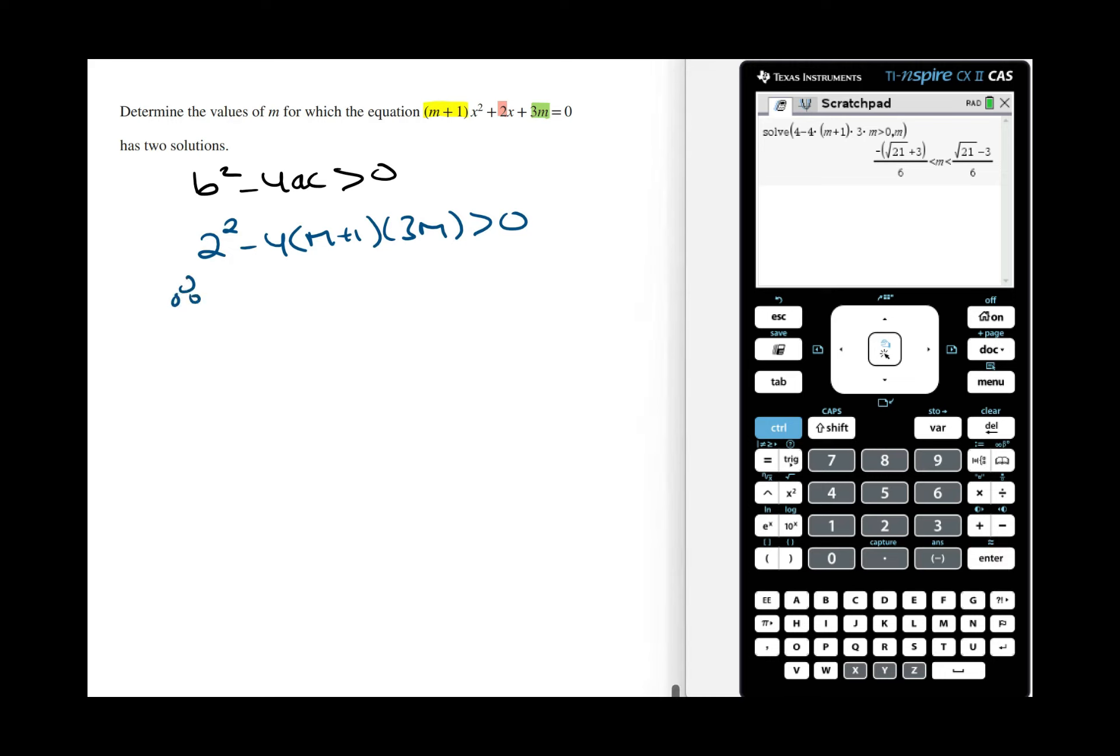Therefore, when the value of m is between negative the square root of 21 plus 3 all over 6 and the square root of 21 minus 3 over 6, the quadratic is going to have two solutions.